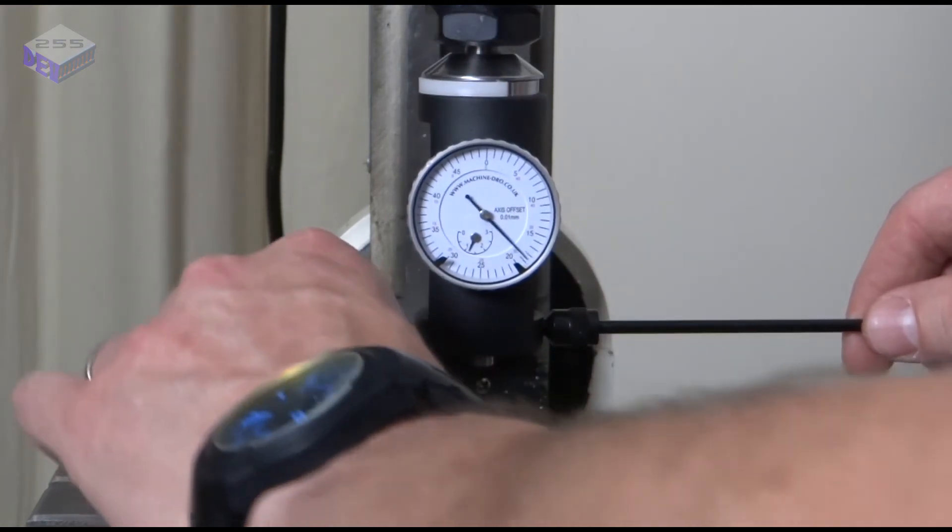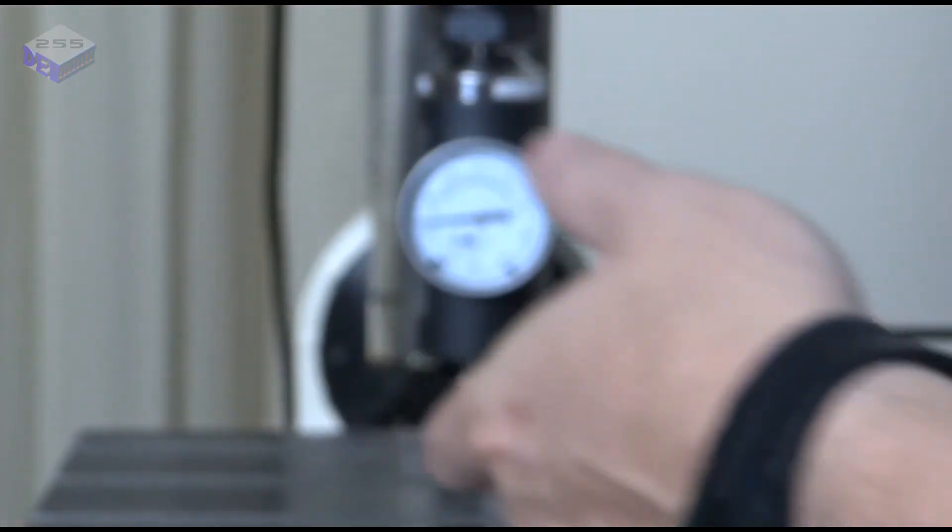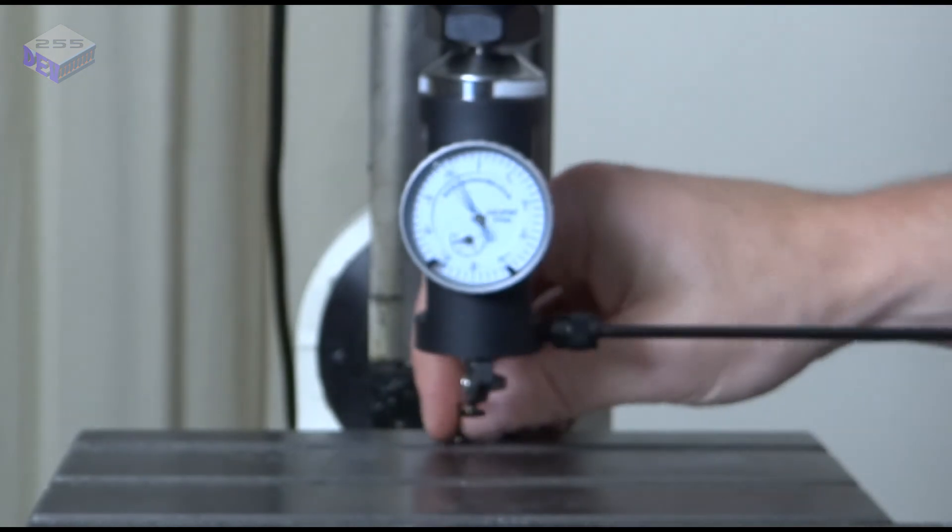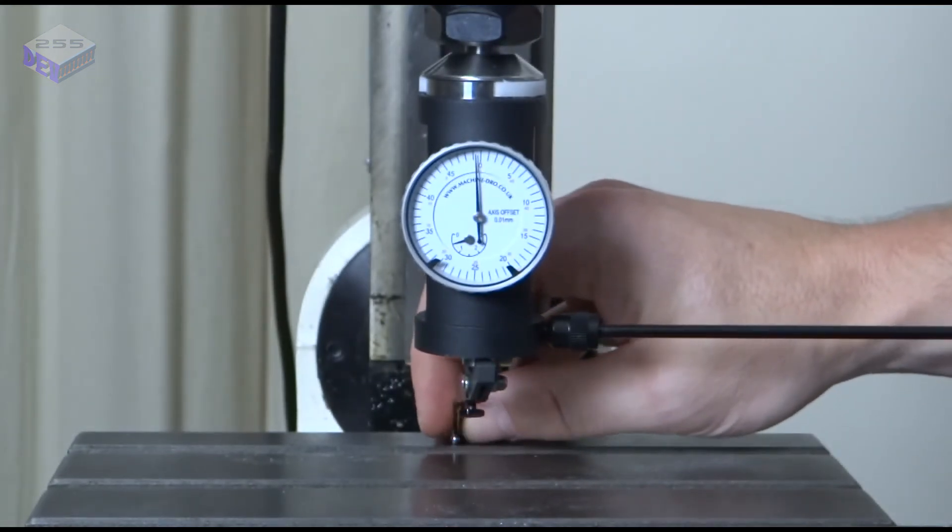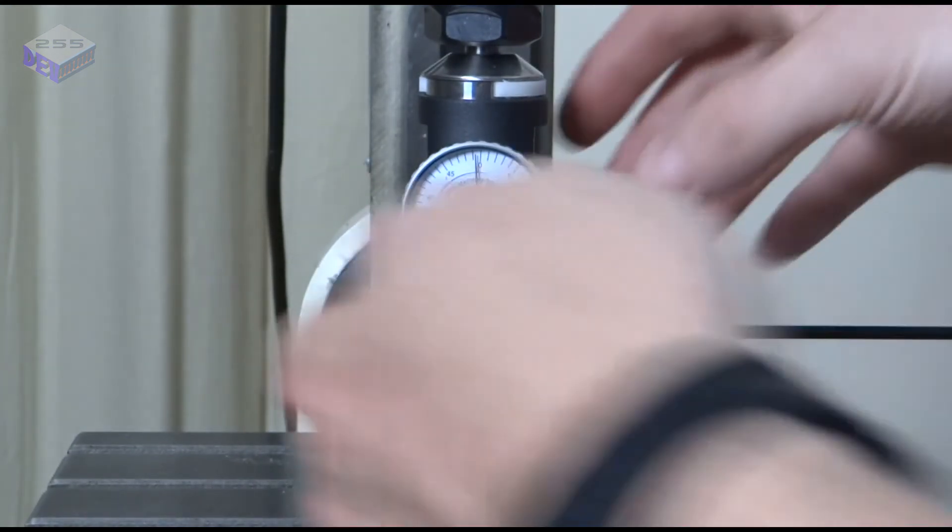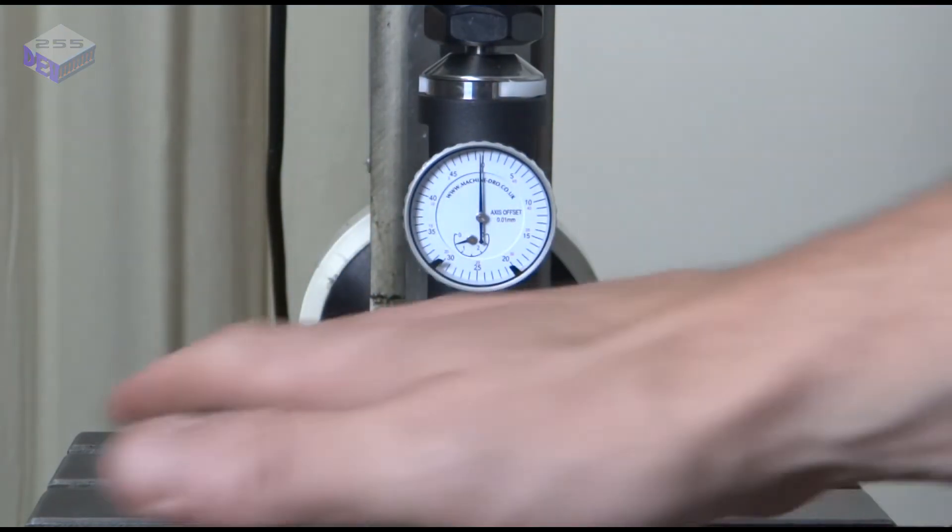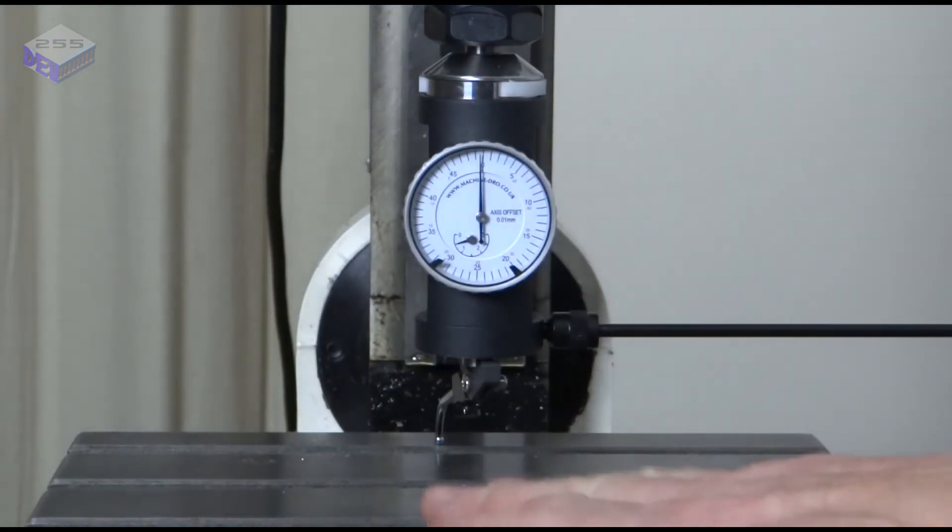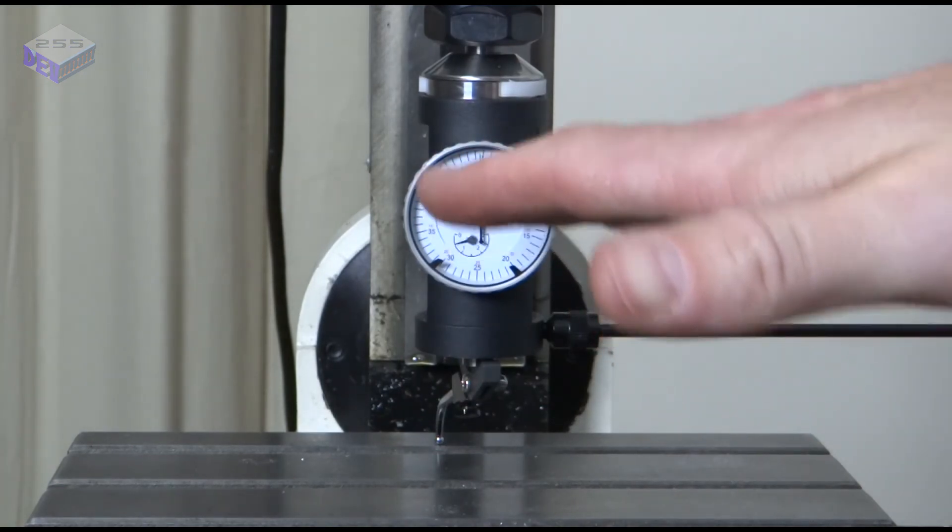I'll rotate that around to the other side. If it's not in the gap, it is in the gap. Bring the table forward, and that's on zero there. So as I machine anything on this surface, the bottom is going to be parallel with the top.